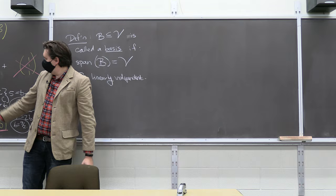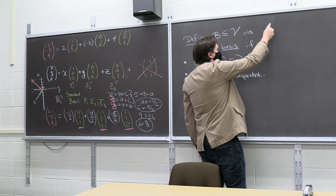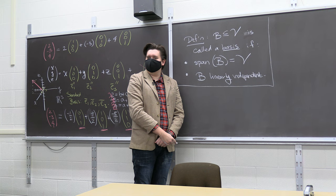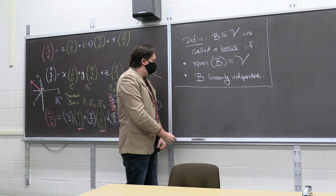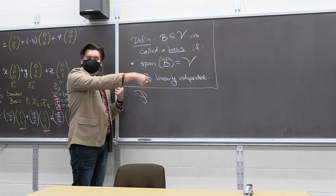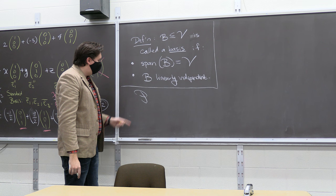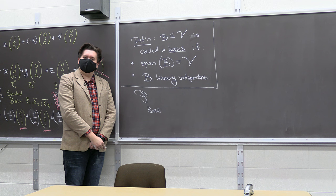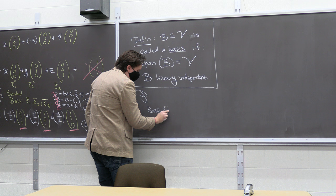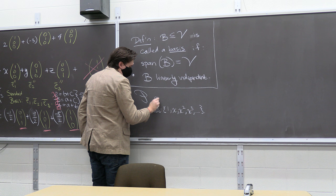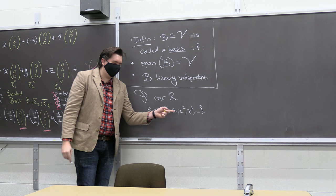Perhaps you're familiar with this for R3, but we've been talking about other vector spaces in this course. Let's consider the space P of polynomials — when I don't include a number, it means polynomials of all powers. Is there a basis for P? The candidate is the powers of x: 1, x, x², x³, and so forth. These are real-valued polynomials, with scalars from the reals.